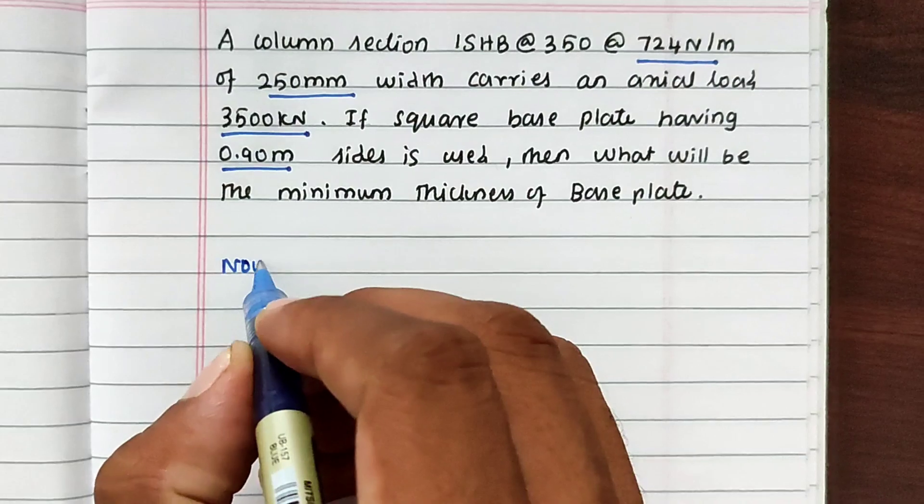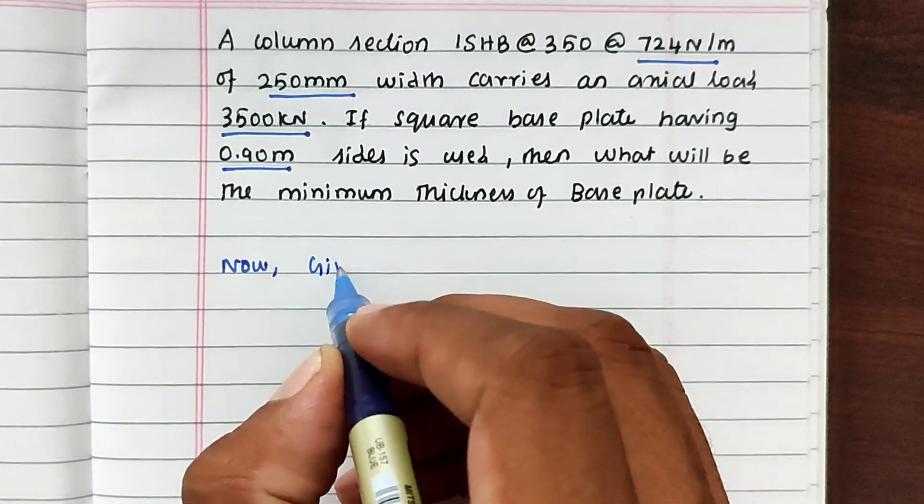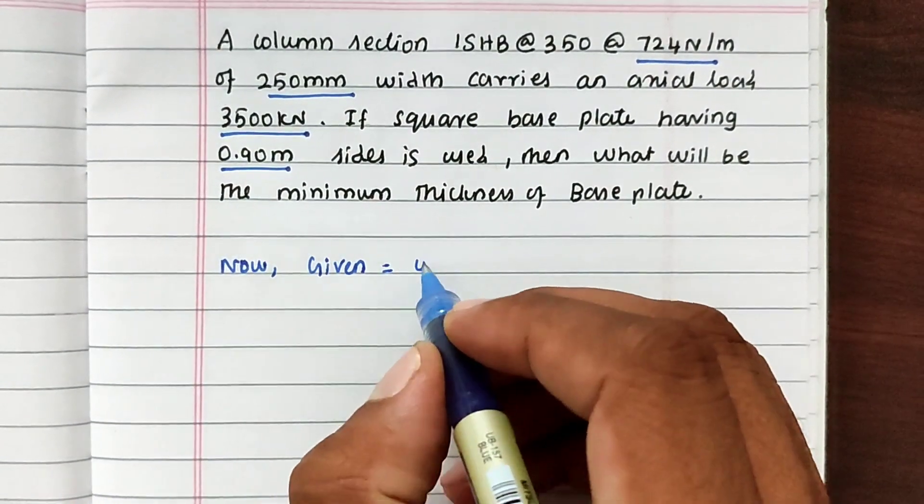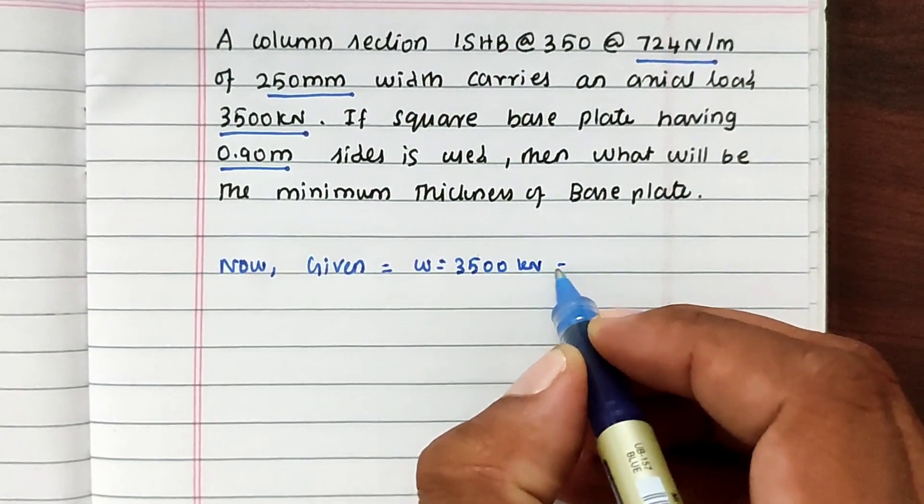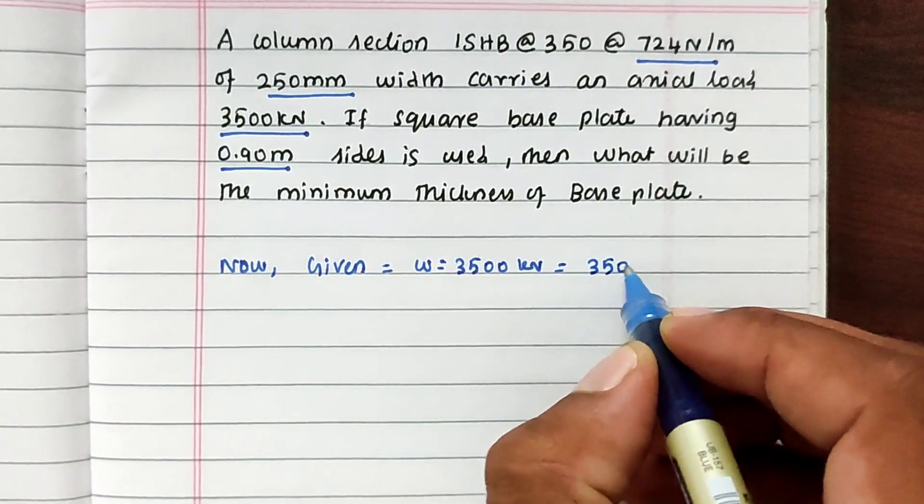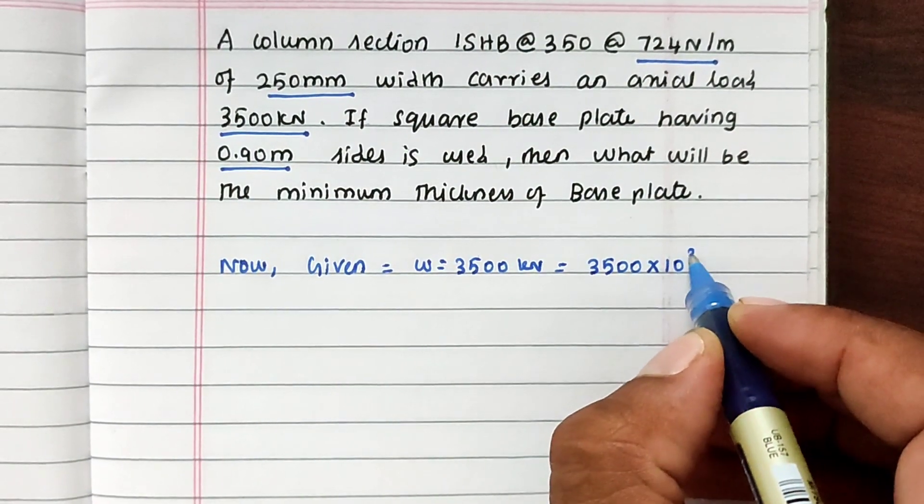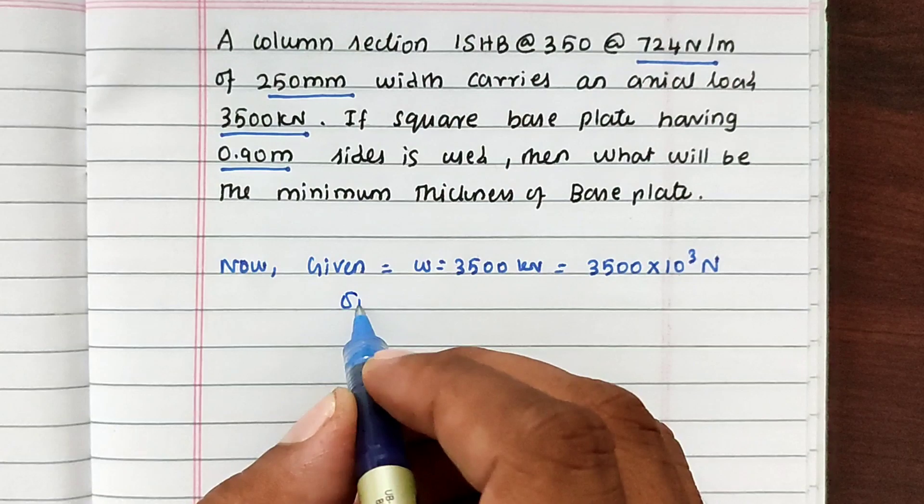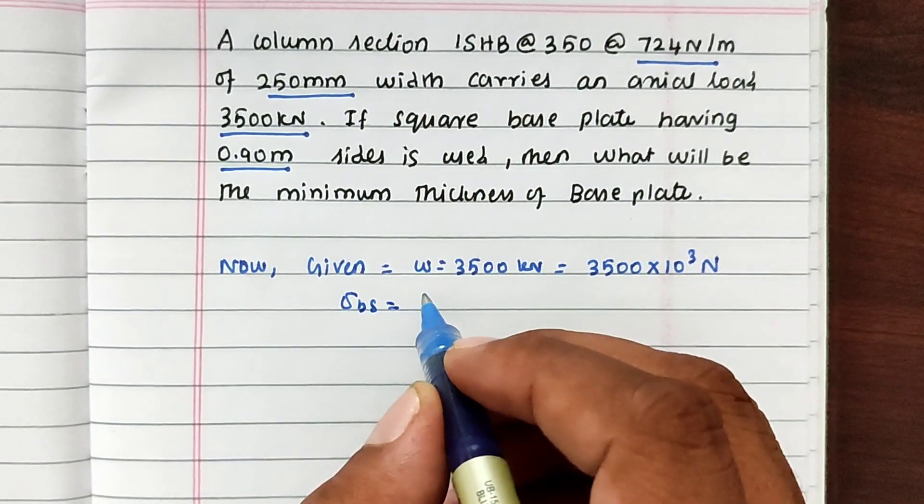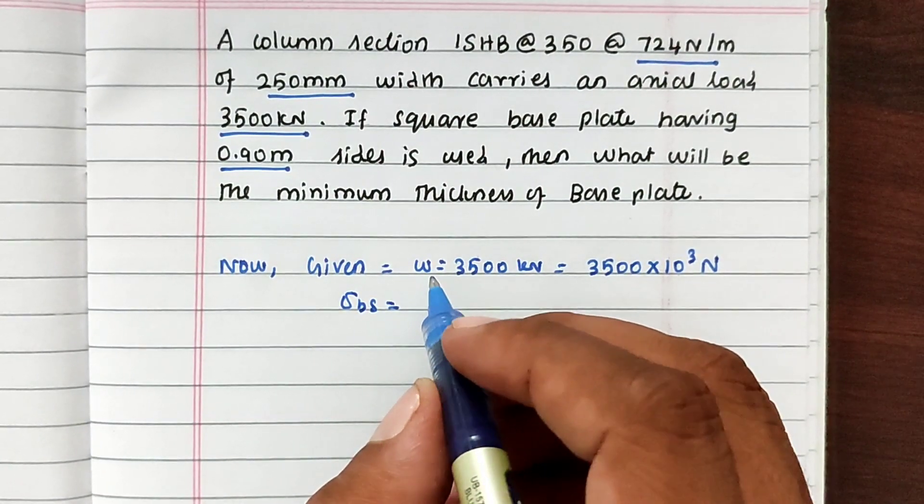Now given: W equal to 3500 kN, that is 3500 into 10 power 3 N. Sigma B is the allowable bending stress on slab.